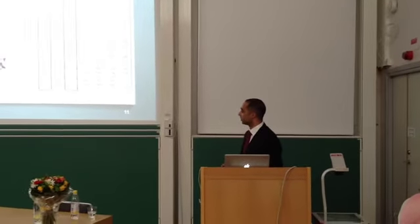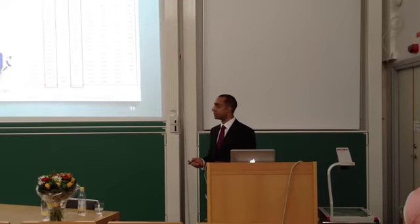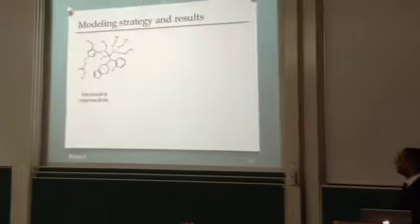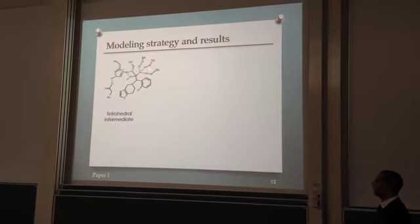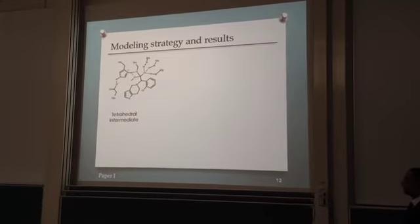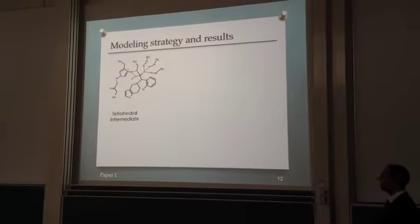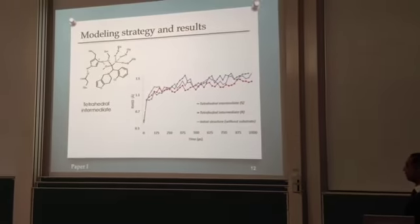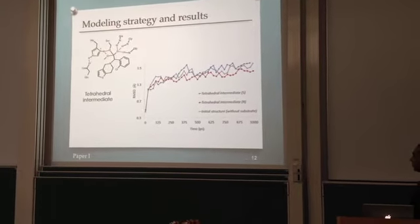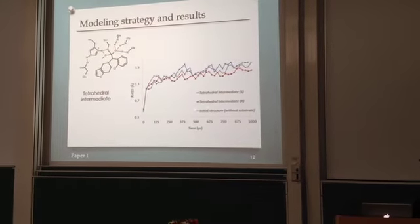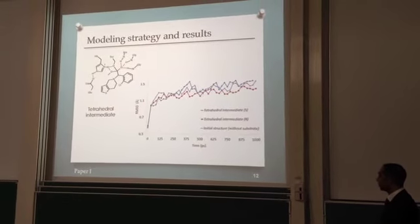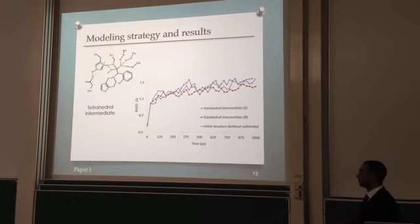The homology model of BLE-1 was used to study the tetrahedral intermediate formed during the enzymatic catalytic mechanism. Here is the tetrahedral intermediate between the substrate and the active site of the enzyme. First, we looked at the effect of the substrate on the C-alpha backbone of the structure. We compared structures after molecular dynamics simulation and measured the root-mean-square deviation, comparing the tetrahedral intermediate of the S-isomer, the R-isomer, and the initial structure. There is no significant difference between the three structures, indicating that the substrate doesn't have a significant impact on the C-alpha backbone.